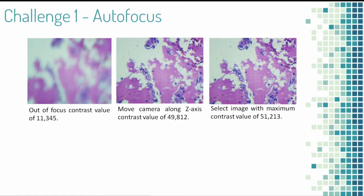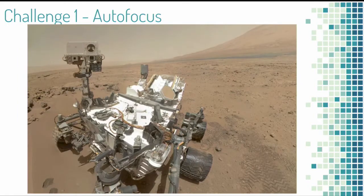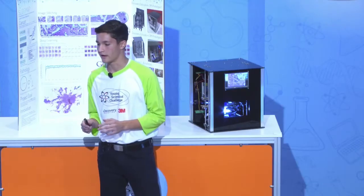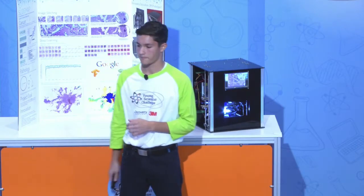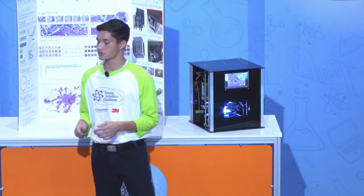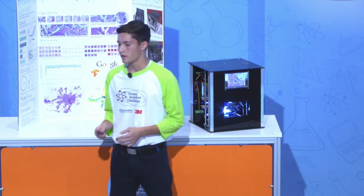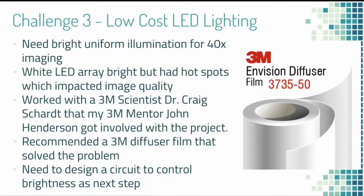Through research, I found NASA solved this problem on the Mars rover by using the largest JPEG image file size as their focused image. I used a Raspberry Pi and REST API to be able to control my machine from anywhere using an internet connection. My last challenge was low-cost LED lighting, as it had to be consistent throughout the whole slide. So I used a high-powered LED and 3M Vision diffuser film to maintain this consistency, and it worked great.